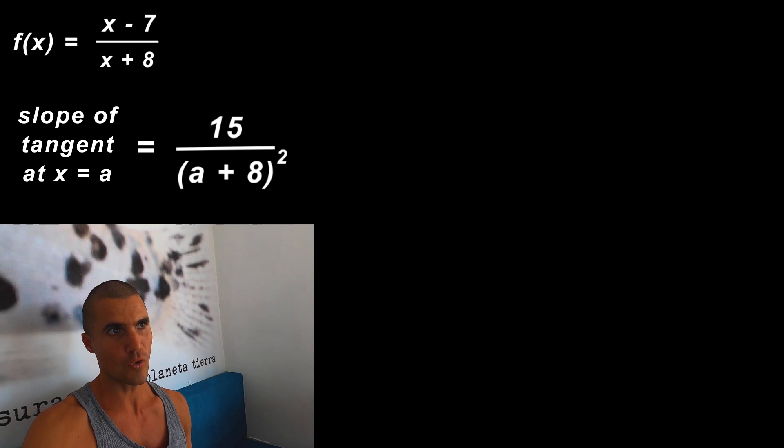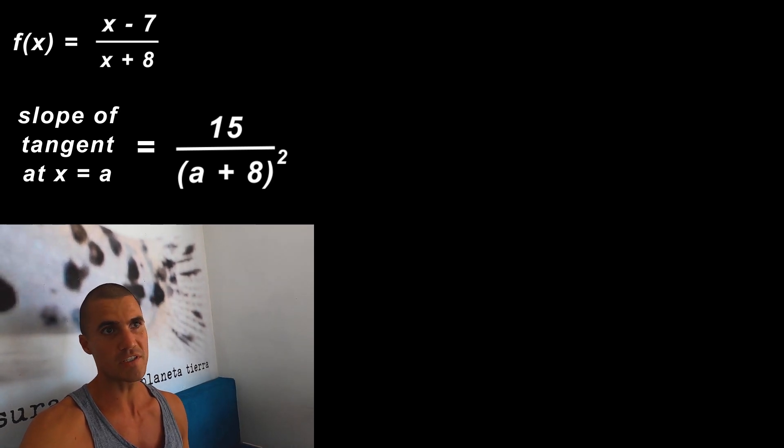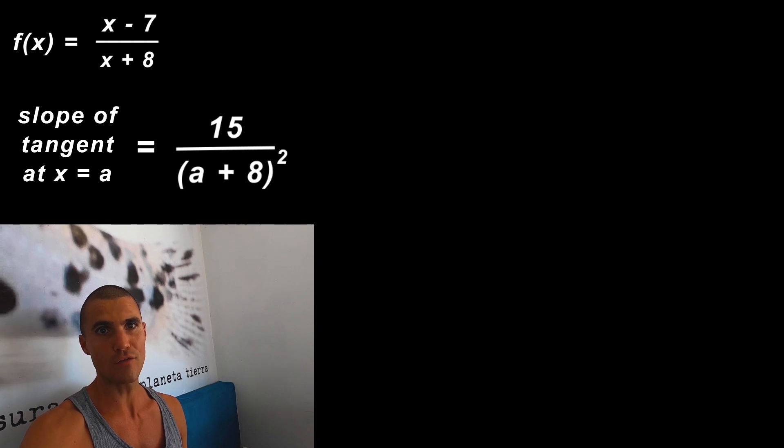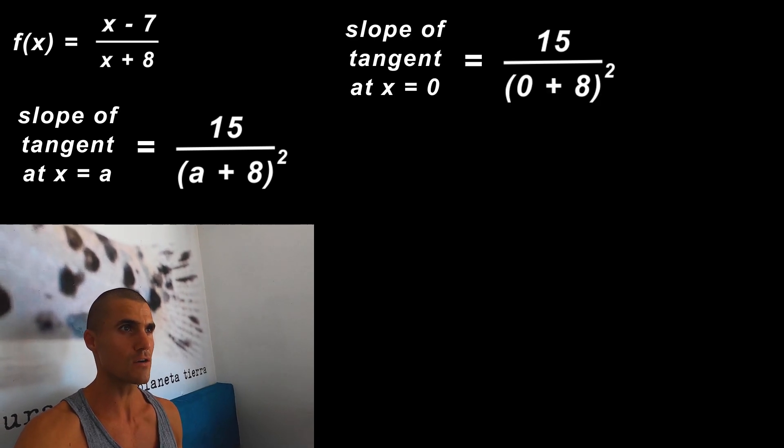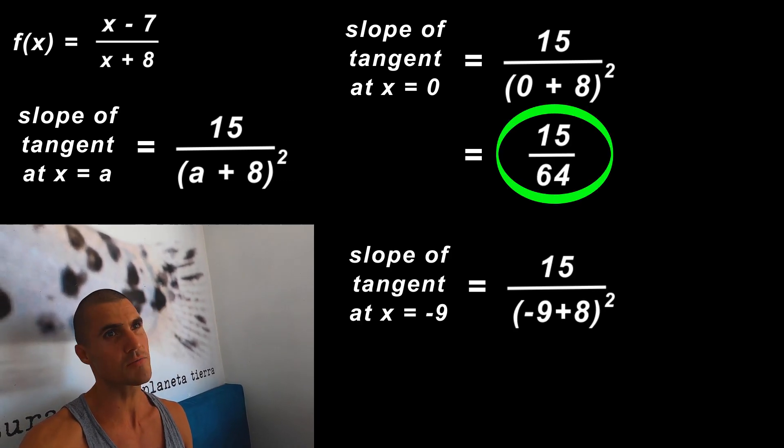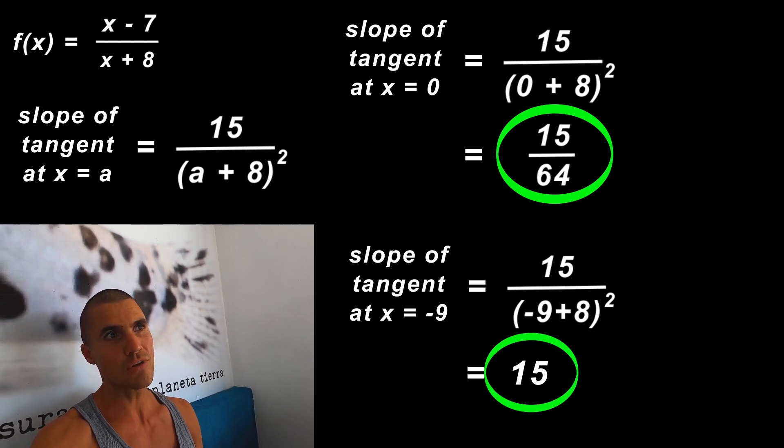Let's finish off part A of the question. We have the expression for the slope of the tangent at any x value of a, and now they're asking what's the slope of the tangent at an x value of zero and at an x value of negative nine. At an x value of zero, if you plug in zero into the expression, you'd end up with 15/64.